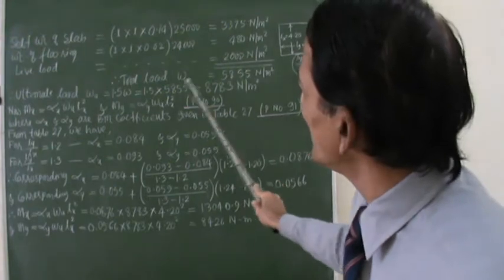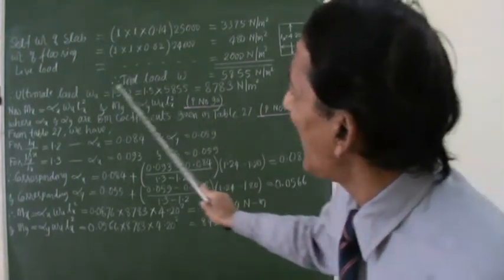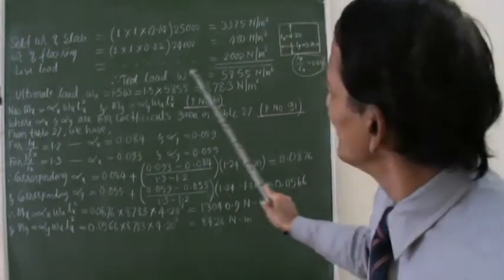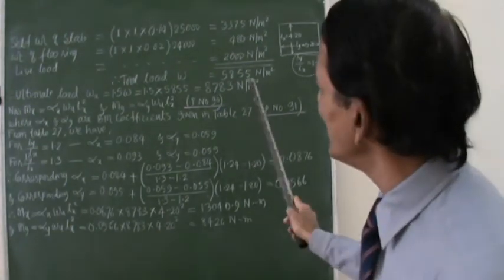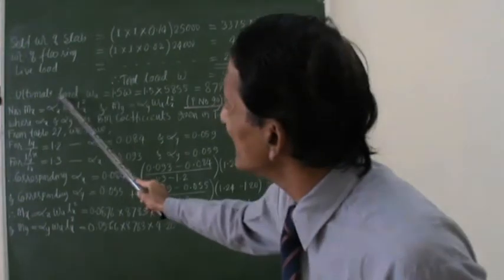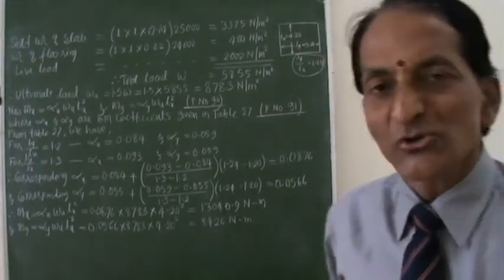So ultimate load can be calculated as 1.5 times w. So it will give me ultimate load wu as 8783 newtons per meter square. So this is our ultimate load.